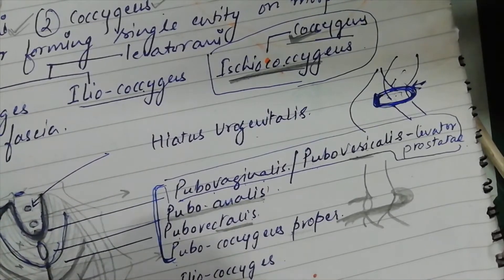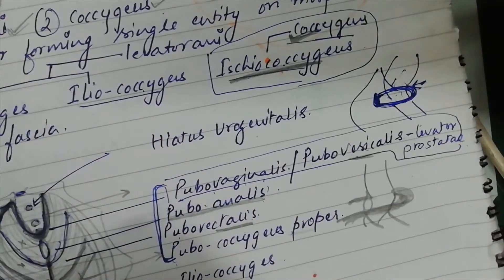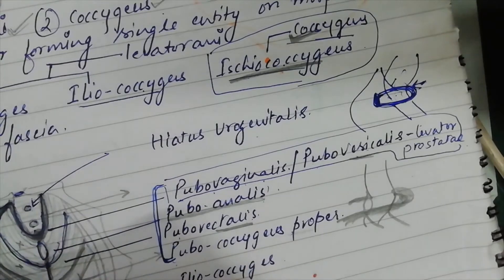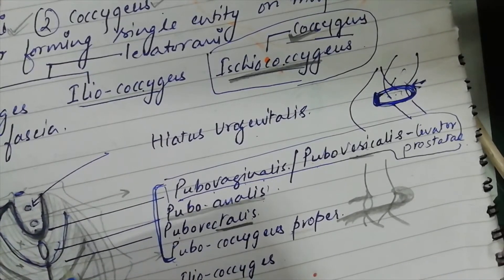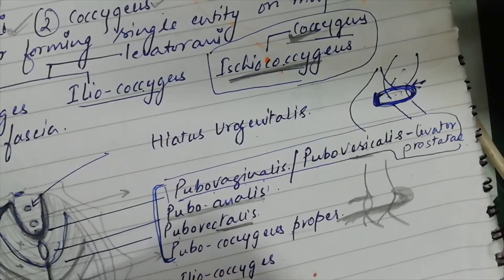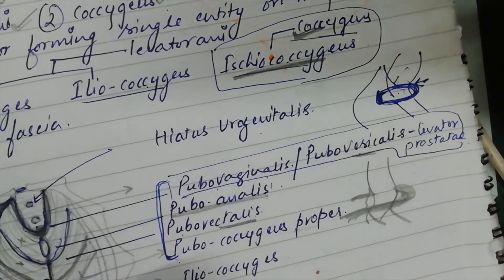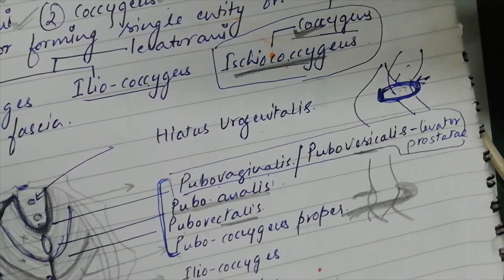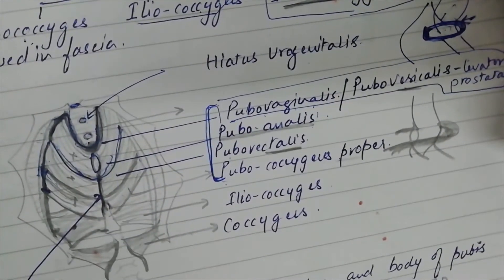The last part of Pubococcygeus is pubococcygeus proper. It originates from the anterior half of the white line and is inserted onto the anococcygeal raphé and the lower piece of the coccyx.